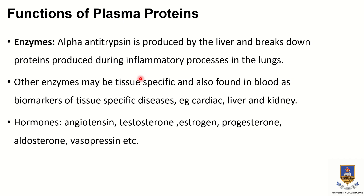Enzymes are another type of plasma protein. An example is alpha-antitrypsin, which is produced by the liver and breaks down proteins produced during inflammatory processes in the lungs. Some other enzymes are tissue-specific and are found in the blood as biomarkers of tissue-specific diseases — for example, diseases of the liver, kidney, or the heart. Enzymes are also a type of plasma protein of high necessity.